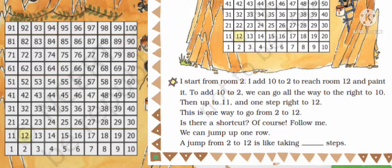Otherwise he can just jump one row up. That means 2 to 12, that is 10 steps forward. A jump from 2 to 12 is like taking 10 steps. Jumping from 2 to 12 is taking 10 steps.